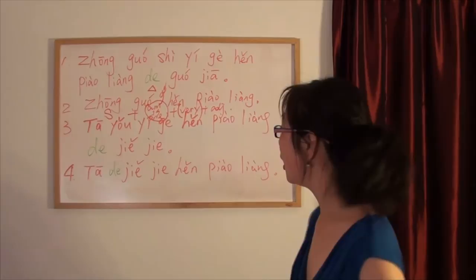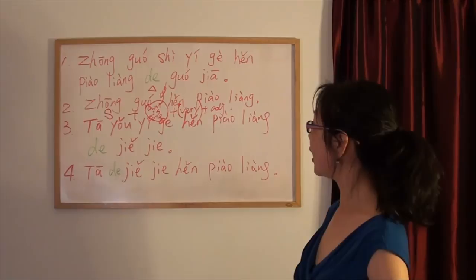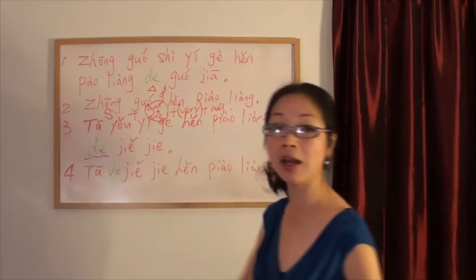Okay. Now, since we have figured out the two sentence patterns, let's take a look at sentence number three and sentence number four. There is also a group. 她有一个很漂亮的姐姐.